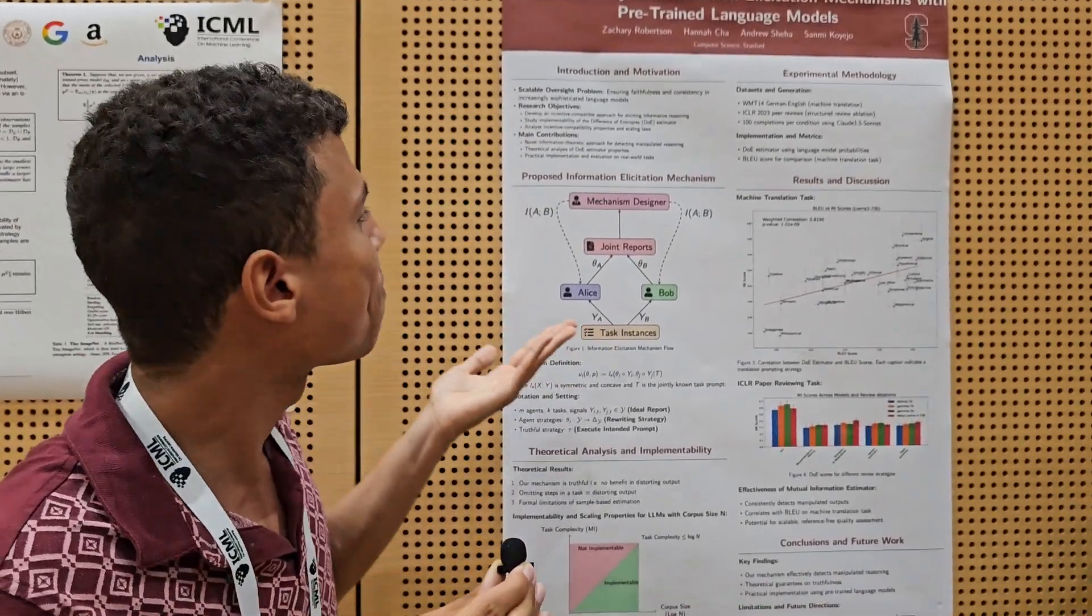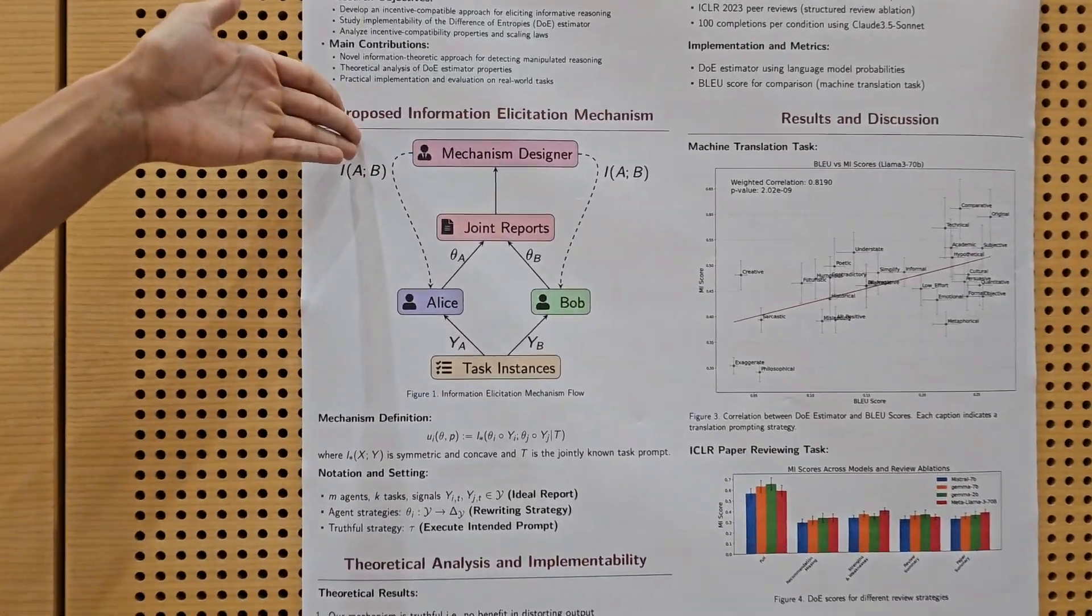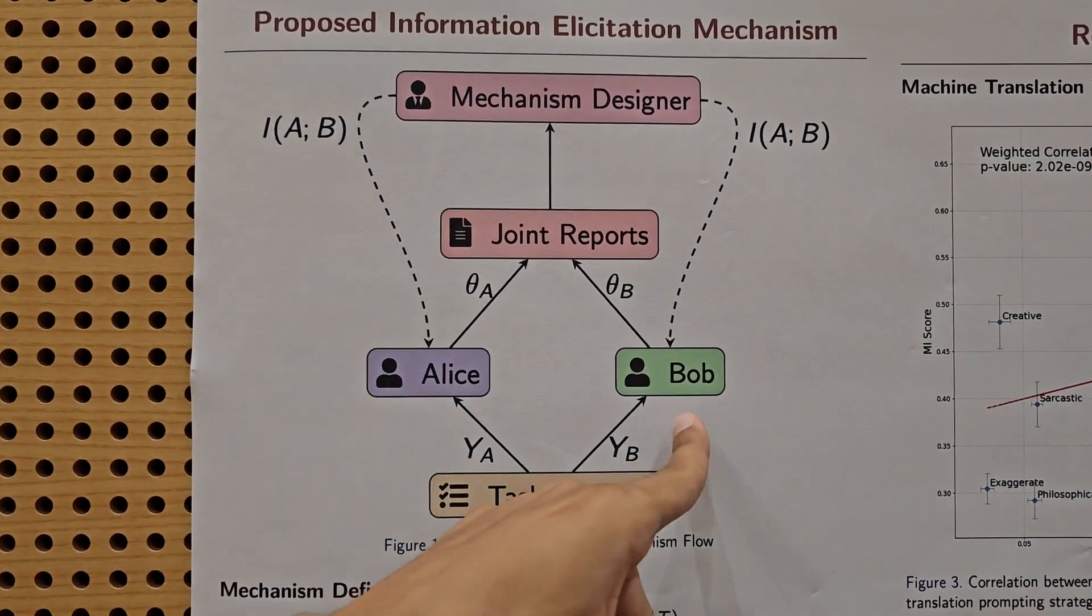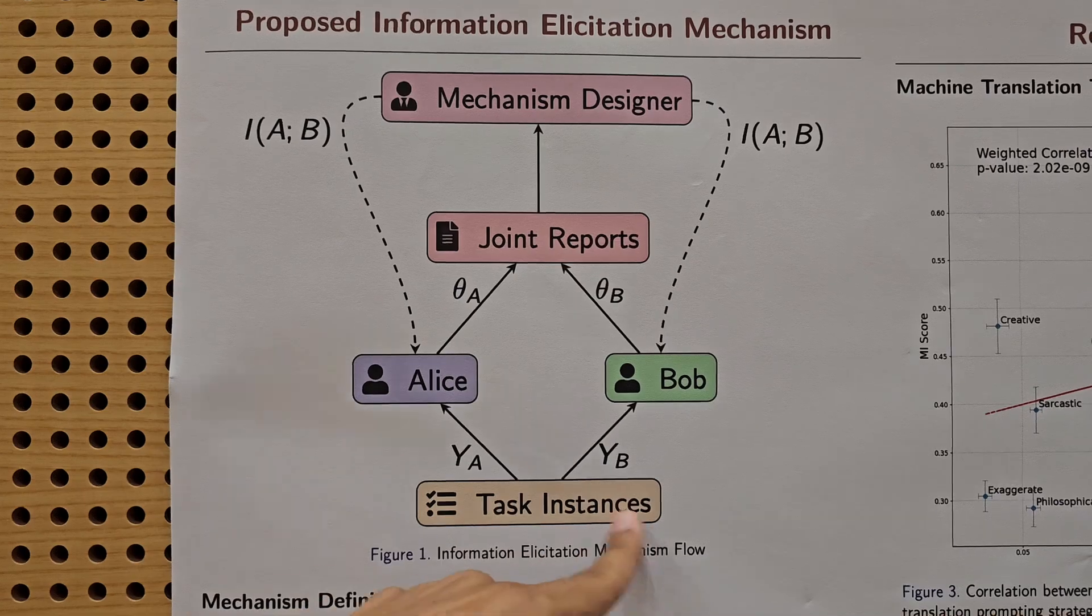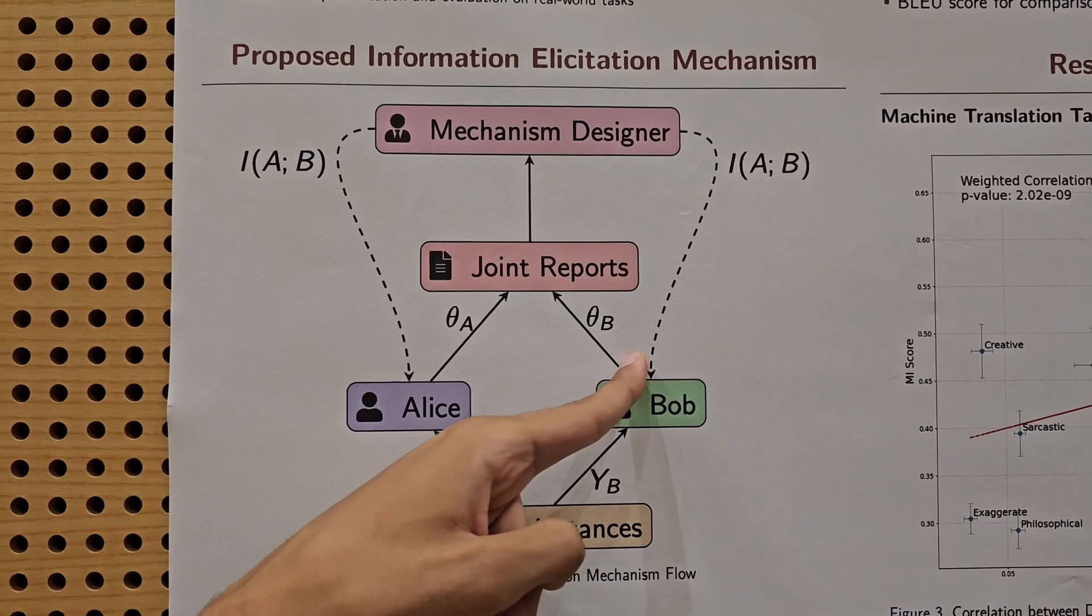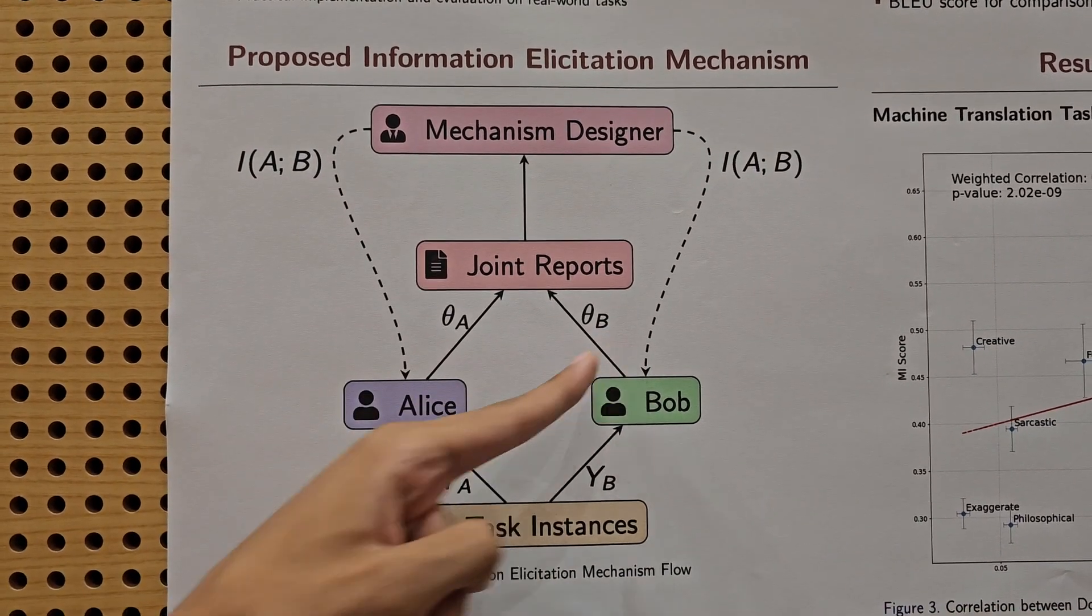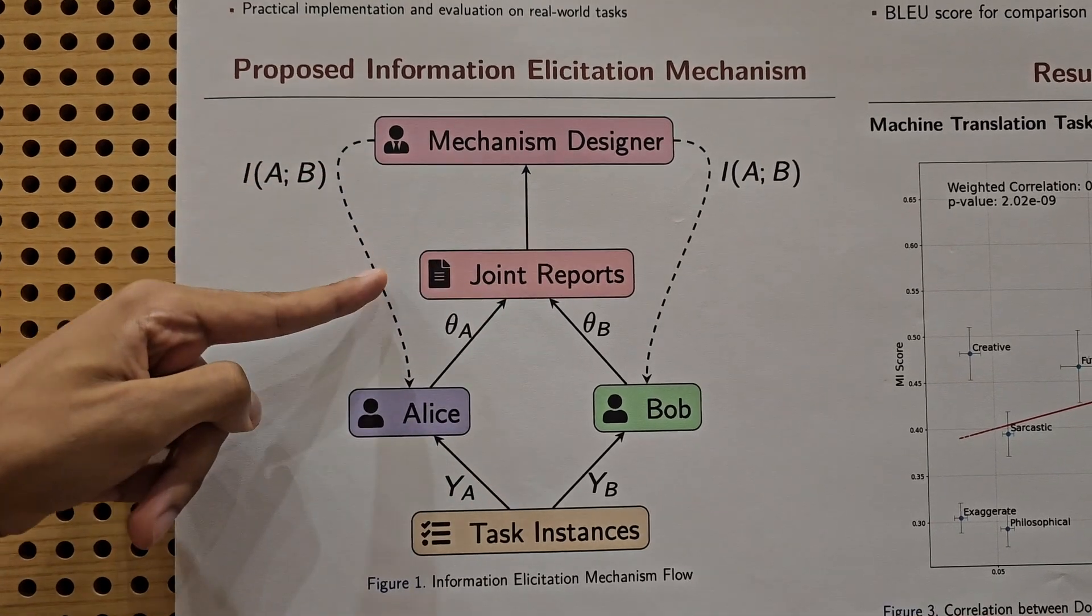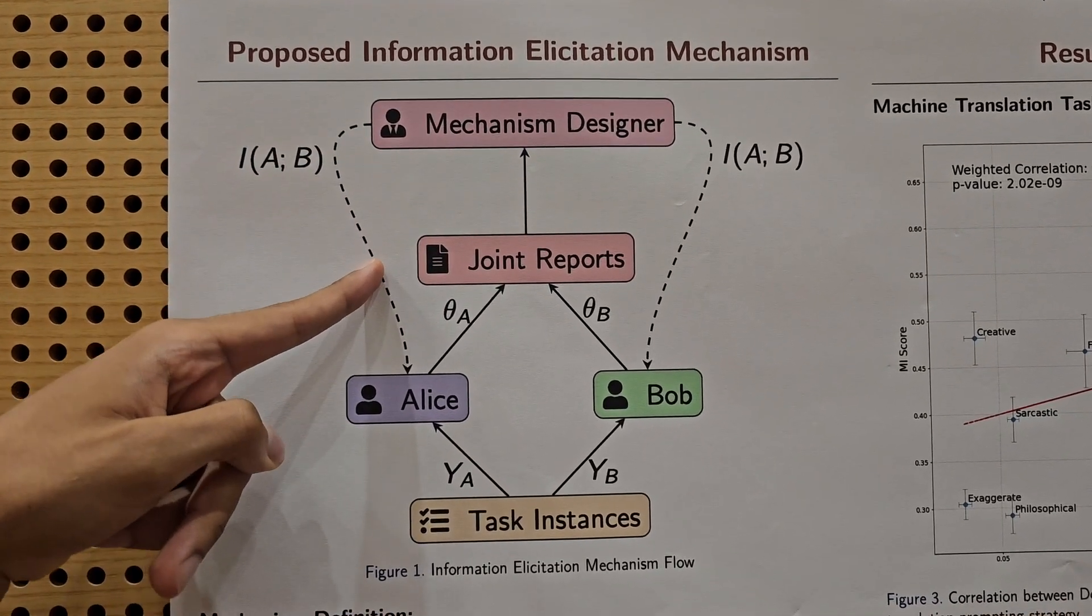So how do we do that? We propose a mechanism where agents like Alice and Bob look at a task example and then they strategize about how to complete the task. After they do that, the mechanism designer sees what those completions were for the task and based on that they score Alice and Bob.